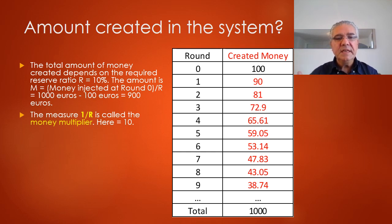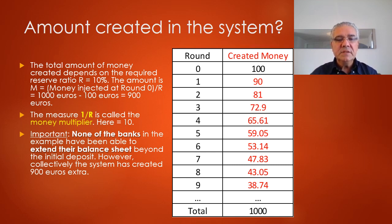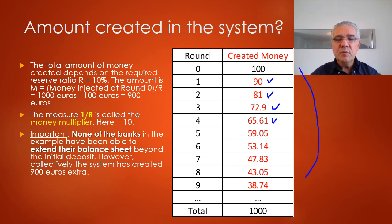The measure one divided by the required reserve ratio is called the money multiplier, and here it equals 10. It is important to note that none of the individual banks at any point has been able to extend balances beyond their initial deposit, yet collectively the system is creating 900 euros. We can see this through successive rounds: round one creates 90 euros, bank two then creates 81 euros, bank three and so on — all these new amounts add up to a final total of 1000 euros.